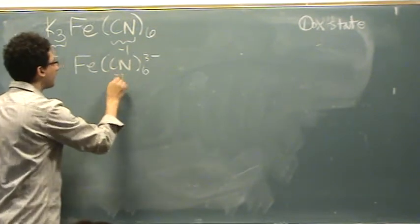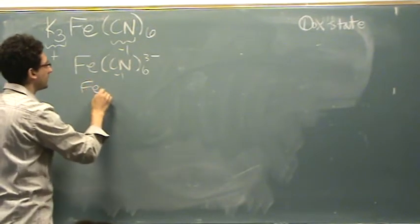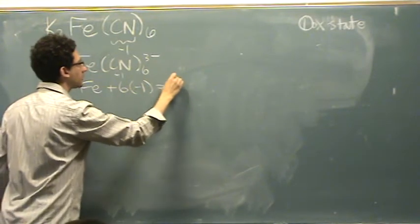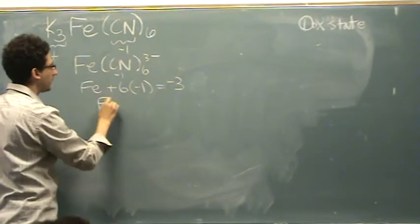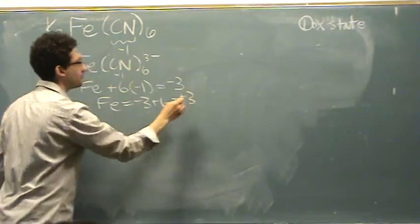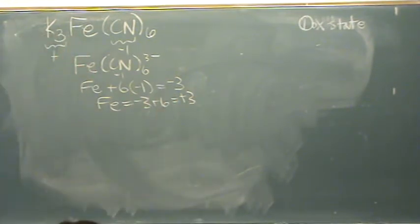Well, if this is each minus one, I would say that iron plus six minus ones equals the overall charge of minus three, or iron equals minus three plus six, which is plus three. So now we have the oxidation state. That's really, for me, the first step.